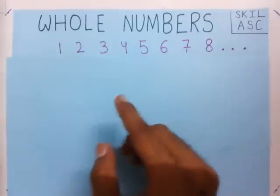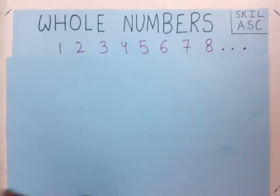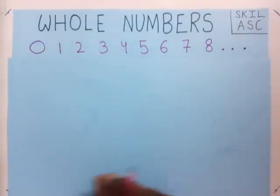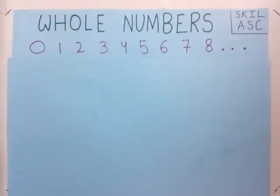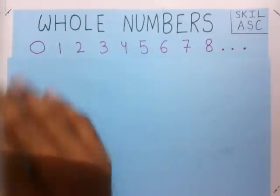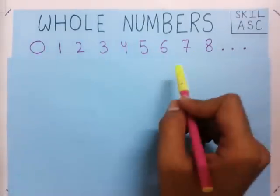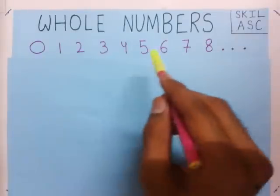These numbers help us while counting. Now, if I include 0 in this list of numbers, then these numbers become whole numbers. I have included 0 with the numbers which are used while counting. So these are whole numbers: 0, 1, 2, 3, 4, 5, 6, 7, 8, 9, 10, 11, 12, 13, and so on.